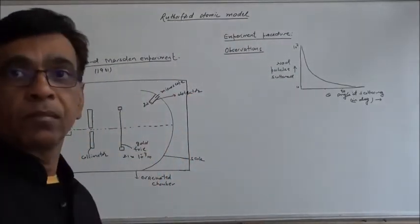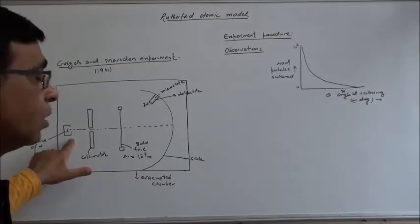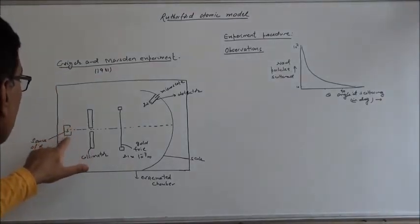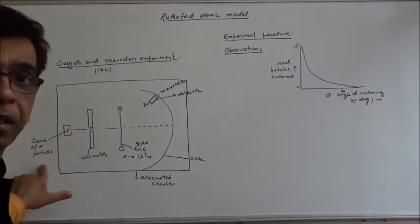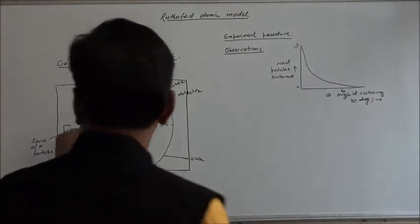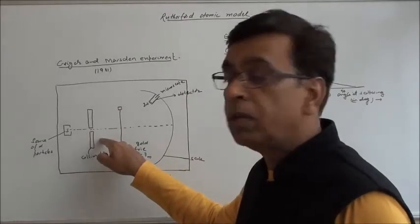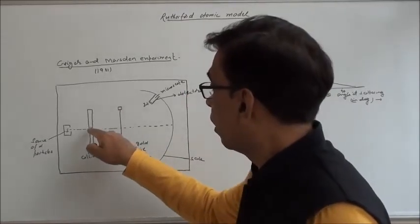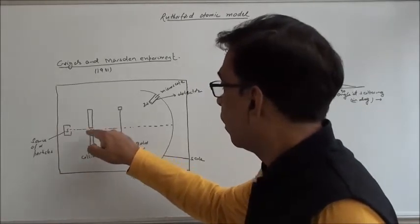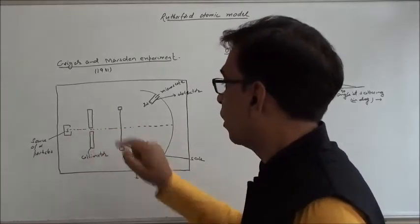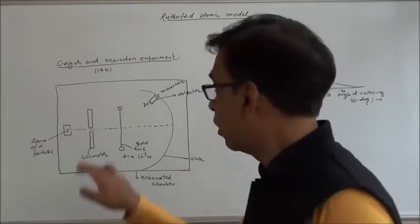This is the experimental setup. We have a source of alpha particles — this is a lead box, S is a source of alpha particles, a radioactive material. Then these two bricks, again made up of lead, with a narrow opening so that alpha particles pass into a narrow beam. We call it a collimator, which collimates the alpha particles into a fine beam.